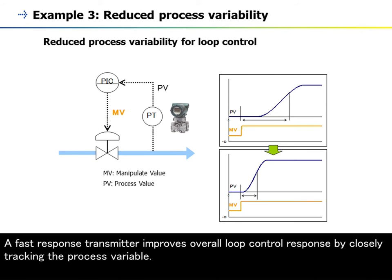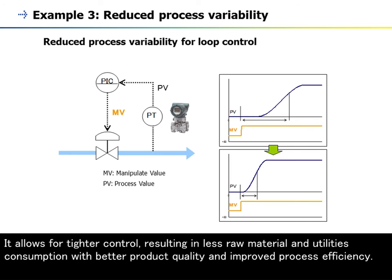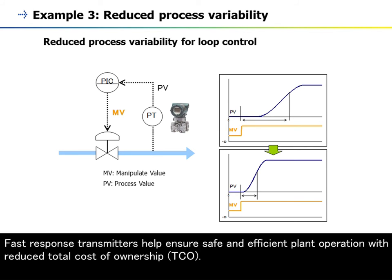A fast response transmitter improves overall loop control response by closely tracking the process variable. It allows for tighter control, resulting in less raw material and utilities consumption with better product quality and improved process efficiency. Fast response transmitters help ensure safe and efficient plant operation with reduced total cost of ownership.